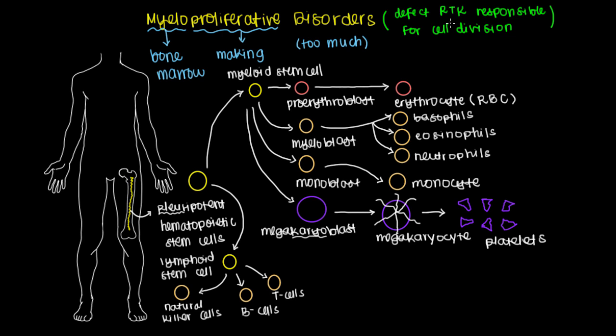The mutation that occurs allows this receptor tyrosine kinase to just always be on. And there are different points along the way where we can have this receptor tyrosine kinase turned on. Say if we have the mutation occurring along this path right here.